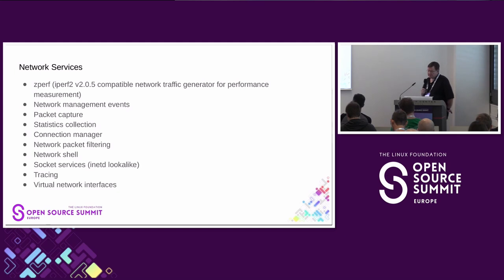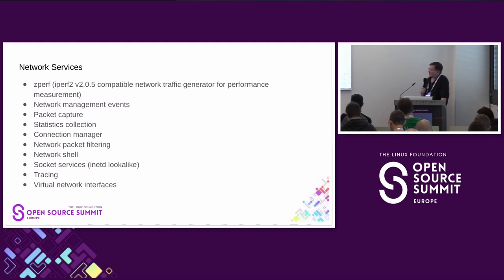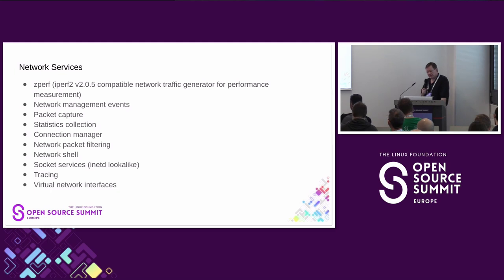The system can be configured to generate statistics, which can be monitored via NetShell or through an API. The connection manager is an entity that can monitor network interfaces in the system — it can turn them on and off depending on some rules. This is mainly useful if you have a multi-interface system. There is also rudimentary packet filtering where you can discard or accept incoming or outgoing packets — this is not really a full firewall, but patches are welcome to enhance it.